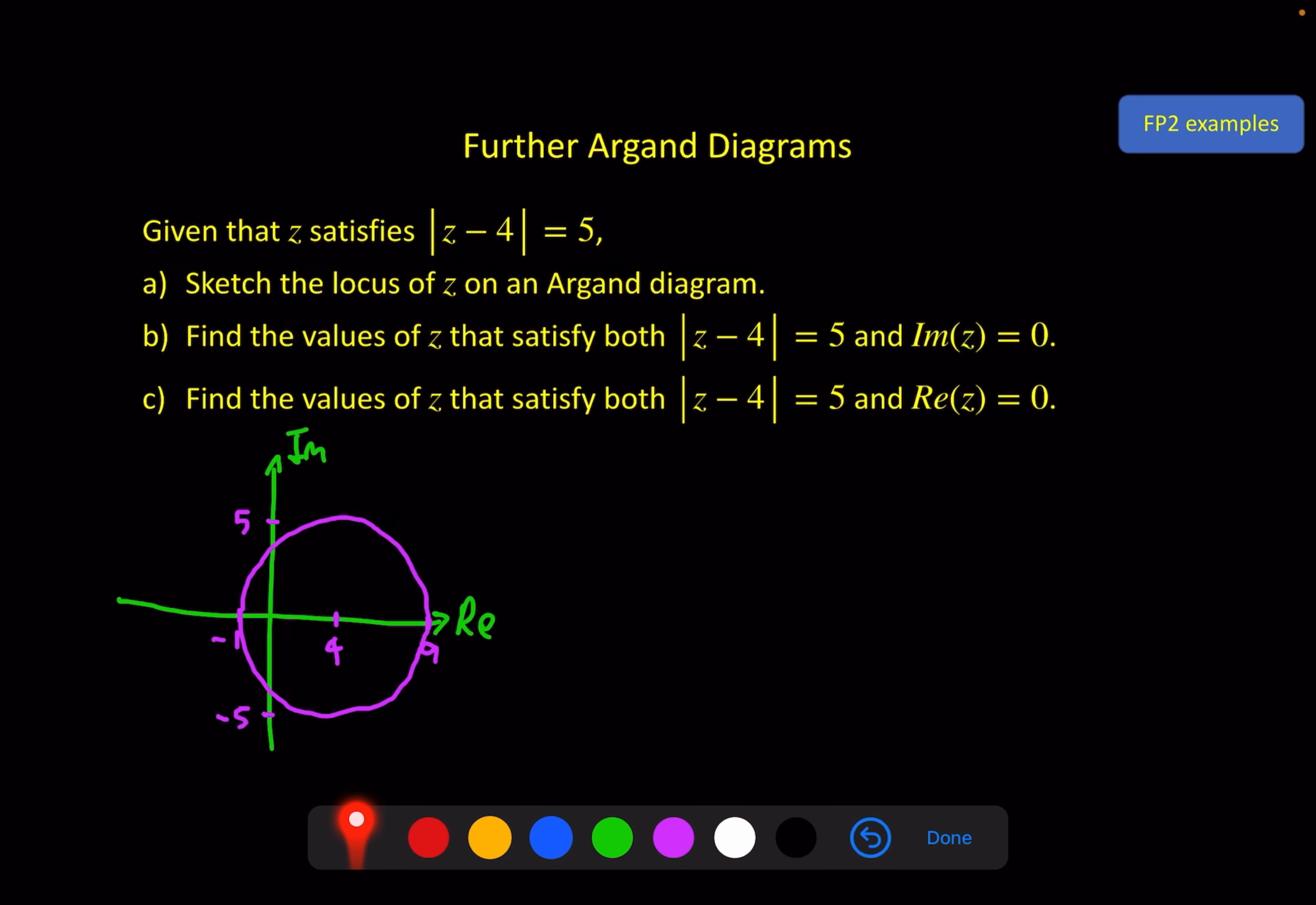Well, we've kind of done that as part of our sketch. The imaginary part of z equals 0 means it's on the real axis, and I found -1 and 9. So for part b, z equals -1, or z equals 9.